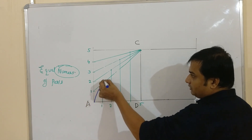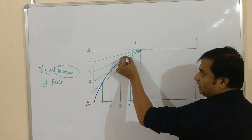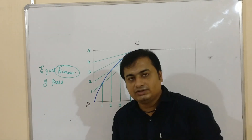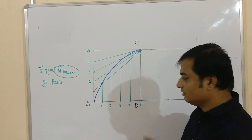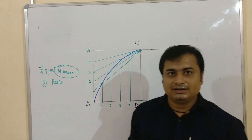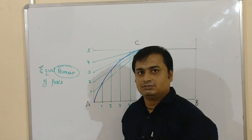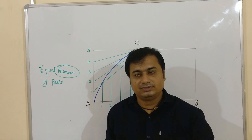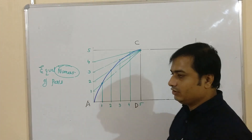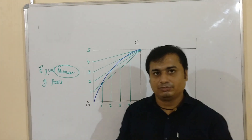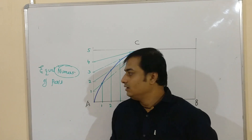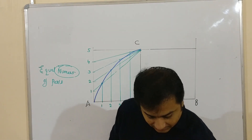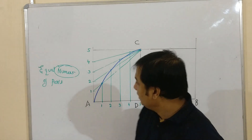Join all the intersection points starting from A and ending at C to form the parabola curve. Note that I am not using any technical instruments here, which is why the curve is not very smooth. Please use technical instruments and an appropriate number of equal divisions to get proper points and a smooth curve.